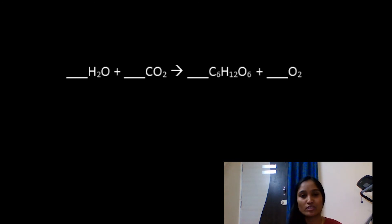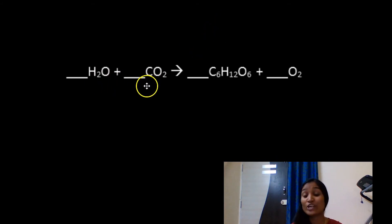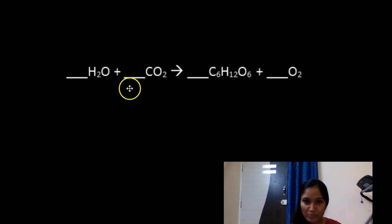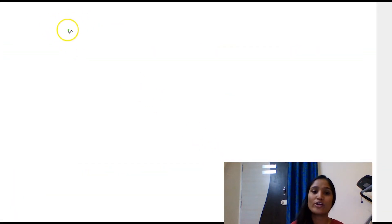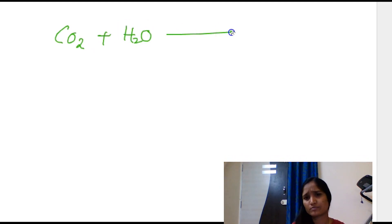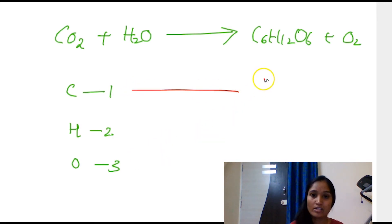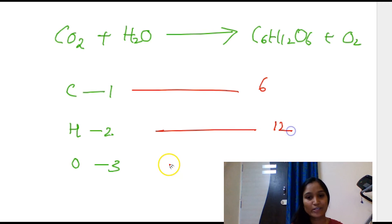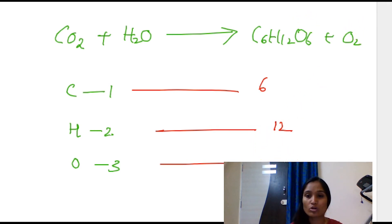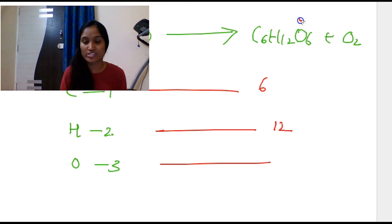Identify the atoms on both sides: hydrogen, oxygen, and carbon are present on both sides. On the left: 2 hydrogens, 3 oxygens (2 + 1), and 1 carbon. On the right — C6H12O6 + O2 — there are 6 carbons, 12 hydrogens, and 8 oxygens (6 from the glucose molecule + 2 from O2). So the counts are clearly unequal.